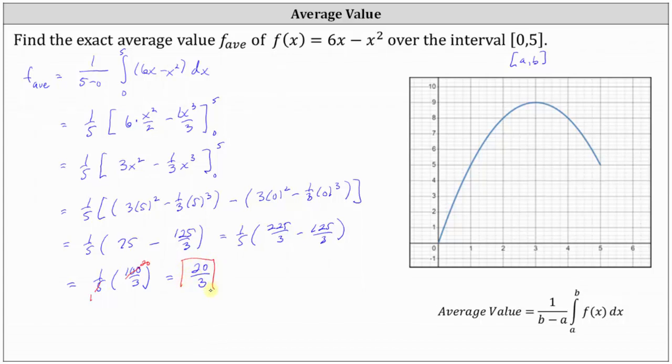To add some meaning to this value, I've graphed f of x over the closed interval from 0 to 5 on the coordinate plane. Let's locate 20 thirds on the vertical axis. 20 thirds is 6 and 2 thirds, which is approximately here.